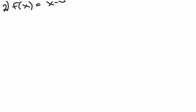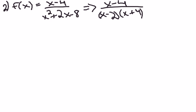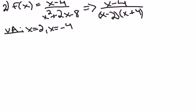Here's number two. We're going to factor the bottom again right away — that's always your first step. It factors to 2x minus 2 times x plus 4. The vertical asymptotes will be positive 2 and negative 4, where the denominator becomes zero. We have a horizontal asymptote at y equals zero again because the degree of the bottom is bigger — this is degree 2, the top is degree 1, what you'd call a heavy bottom.